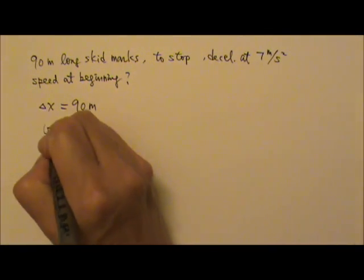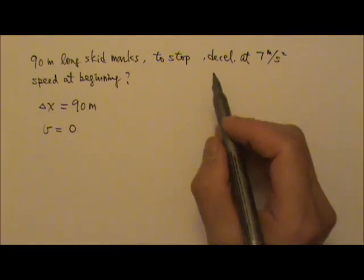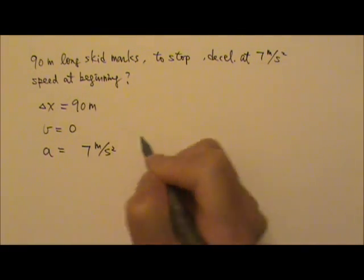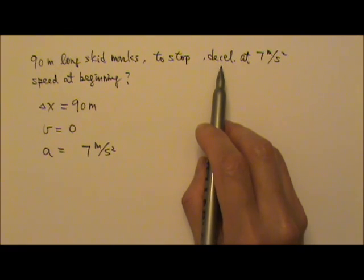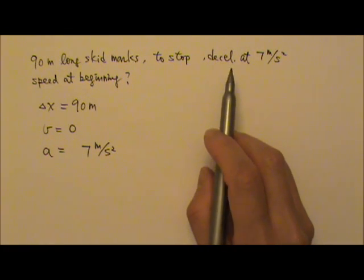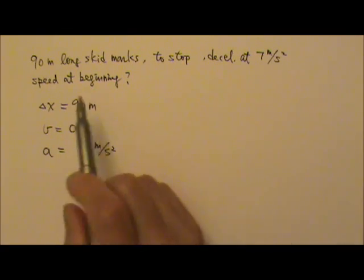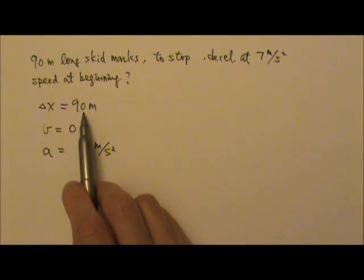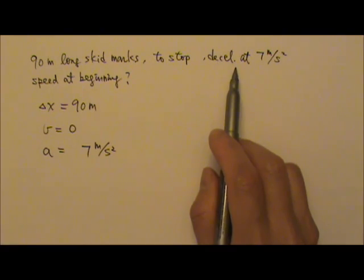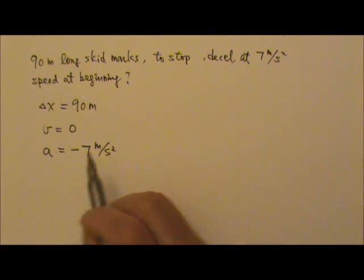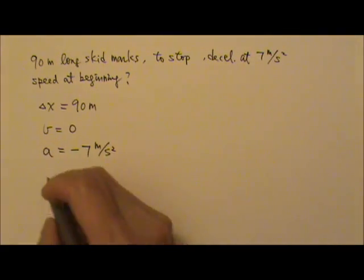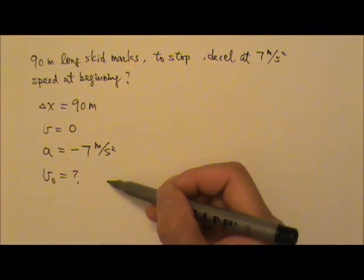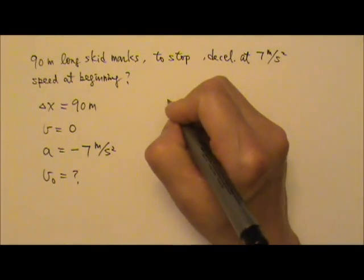To a stop, that means the final velocity is 0. To decelerate at 7 meters per second squared, that's the acceleration, 7 meters per second squared. Now because it's slowing down, that means the velocity and acceleration are in the opposite directions. If we say the displacement is positive, the object, the car in this case is traveling in the positive direction. That means the acceleration must be in the negative direction. So the a is negative 7. And you want the speed at the beginning, so you're looking for the initial velocity. No time is given, and you're not looking for time either. That means our new equation can be convenient to use.